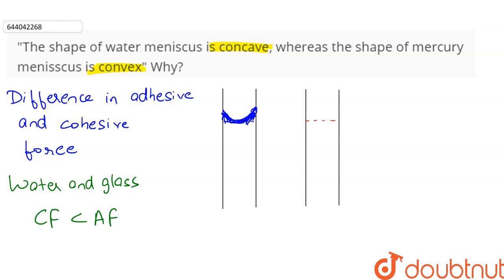On the other hand, for mercury (Hg) and glass, the cohesive force between mercury particles is greater than the adhesive force between mercury and glass. Because of this imbalance of force, the mercury molecules pull the molecules on the surface inwards.